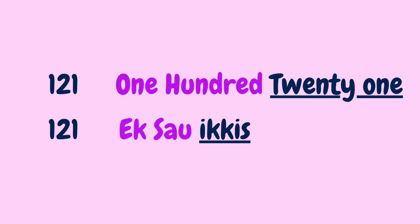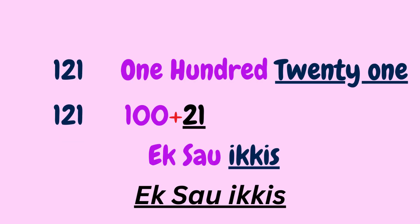Let's take the example of number 121. The Hindi equivalent of 100 is 'ek saw', and 21 is known as 'ikkis' in Hindi. So 121 becomes 'ek saw ikkis'. Basically, we pronounce 100 plus 21: 100 is 'ek saw' and 21 is 'ikkis', so we say 'ek saw ikkis'.